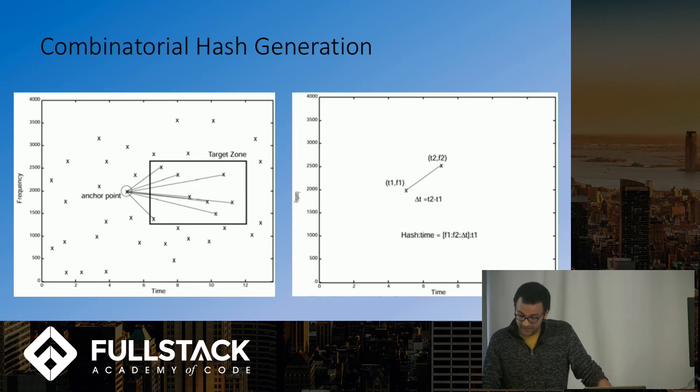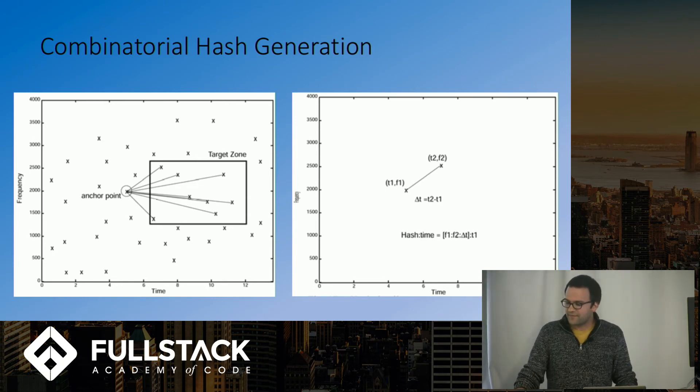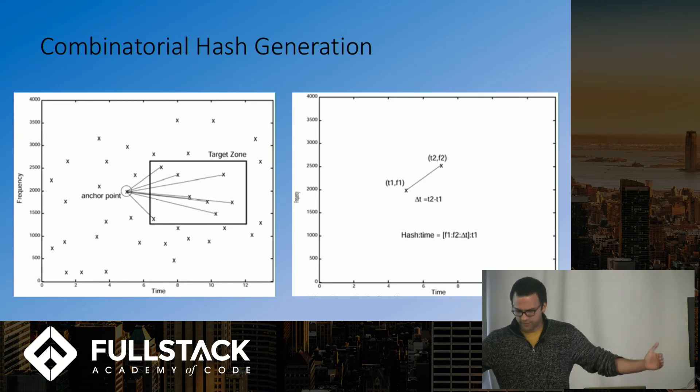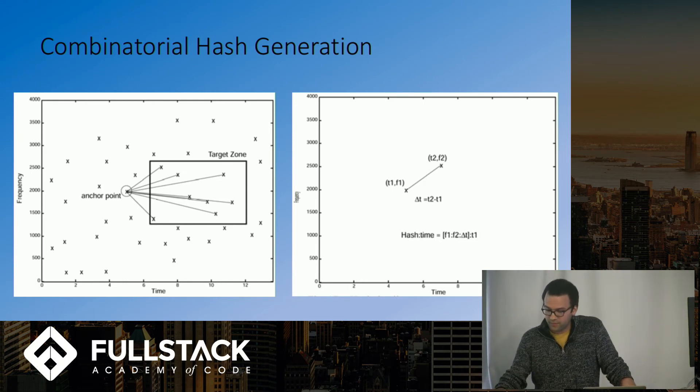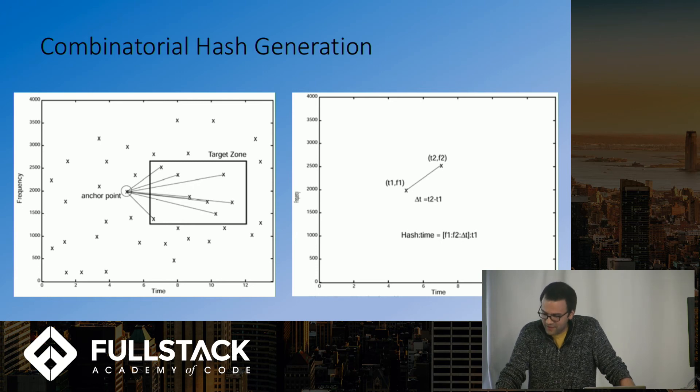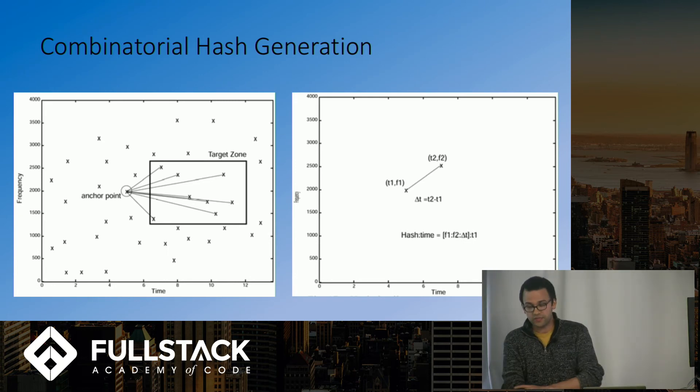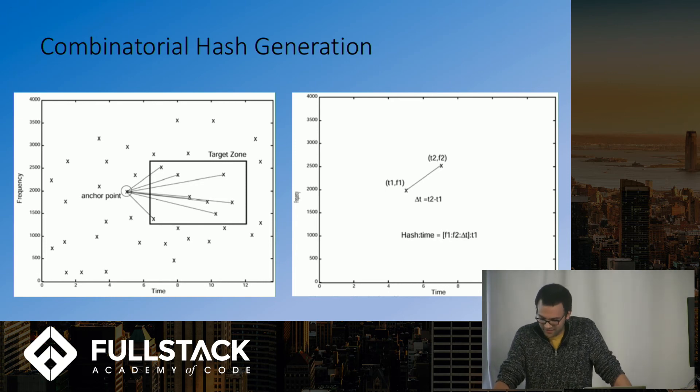So by this point in the process, the algorithm has effectively exchanged the problem of matching a 10-second clip to a three-minute song within a 45-year universe of sound with the problem of matching multiple consecutive hashes. And here, the magic of hash tables comes into play. Shazam's search algorithm has an n log n search time under the worst conditions, and so they say, constant search time under ideal conditions.